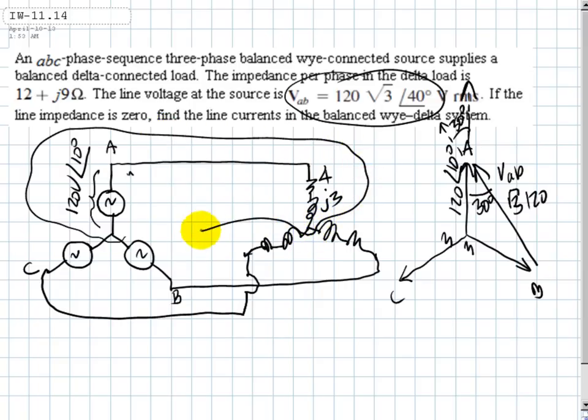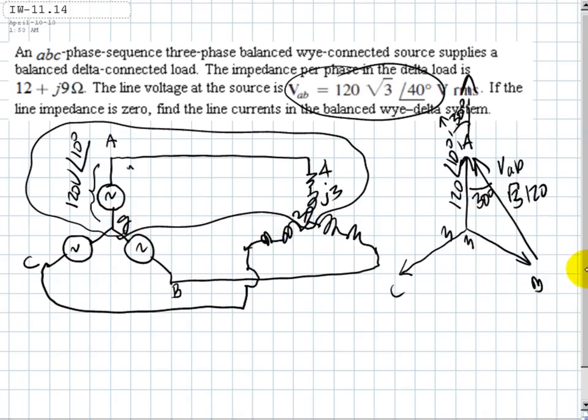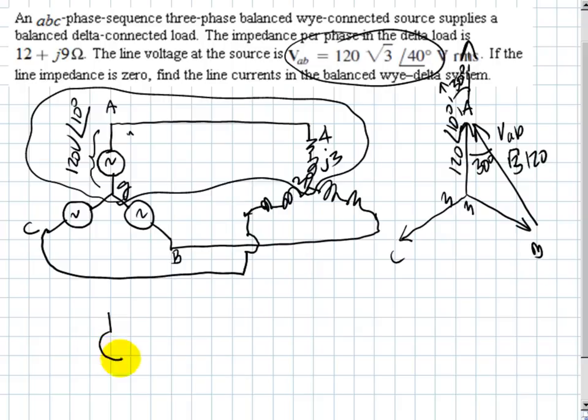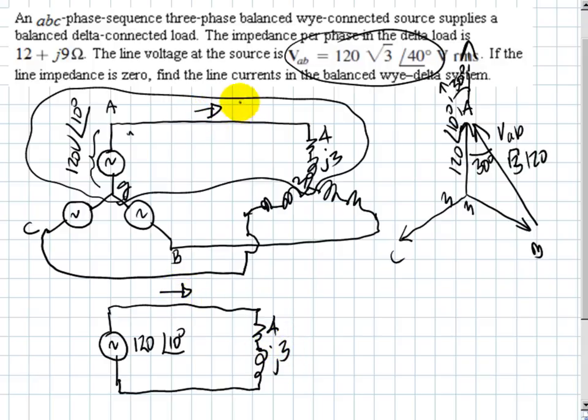Then I solve only phase A, because I know that out of symmetry, the voltage between G and N is zero. So I solve only that circuit. This is 120 at 10 degrees. Here there is 4 ohms, j3, and I can compute the current. That is the line current for phase A.